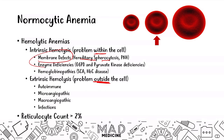In hemolytic normocytic anemias, you're going to have an increase in your reticulocyte count, which is going to be greater than 2%. Normal is usually 1% to 2%. In non-hemolytic normocytic anemias, you're going to have a normal reticulocyte count. Therefore, hemolytic anemias have an abnormal reticulocyte count. That is very, very important — very high yield.